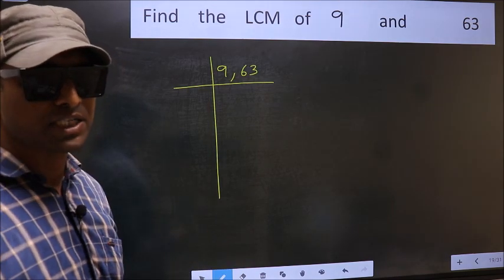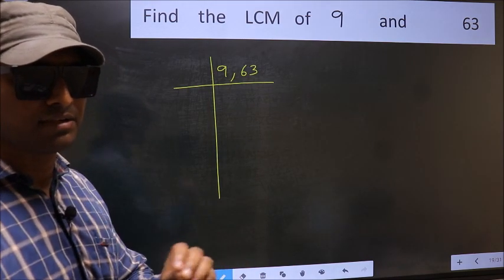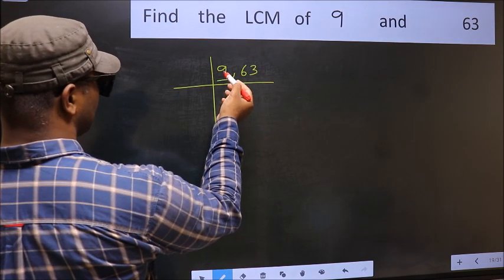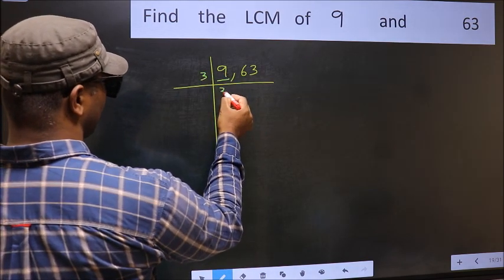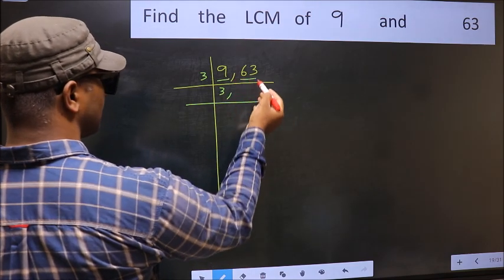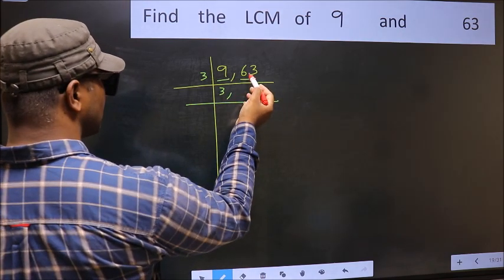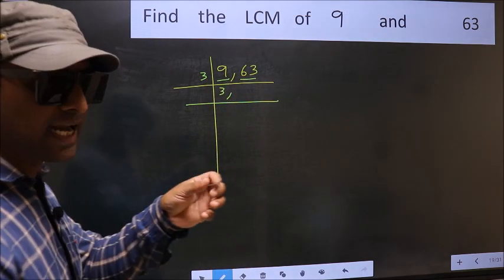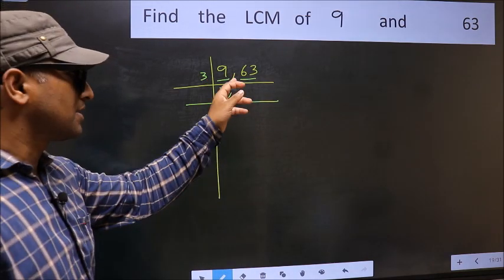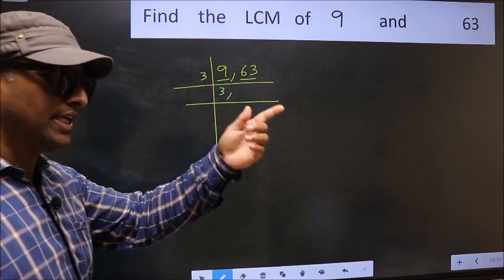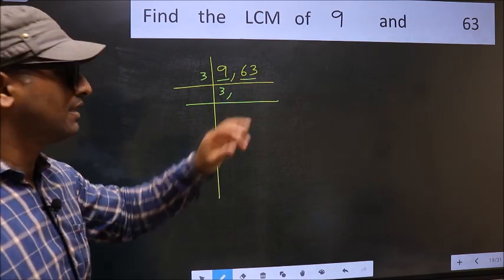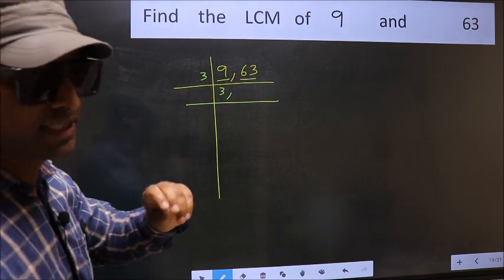Now focus on the first number which is 9. 9 is 3 times 3. The other number is 63. To check whether 63 is divisible by 3, add the digits: 6 plus 3. We get 9, and 9 is divisible by 3, so this number is also divisible by 3.